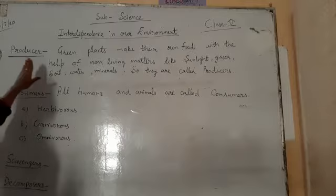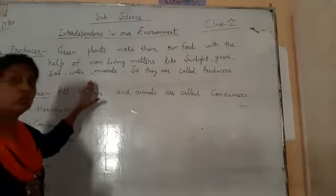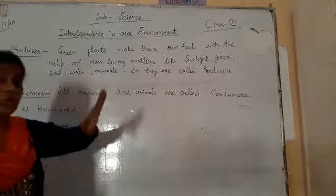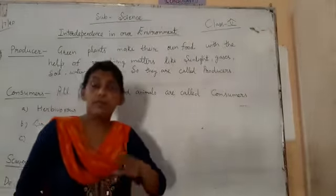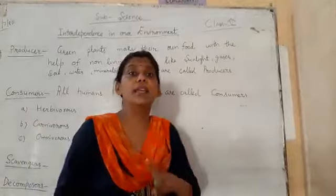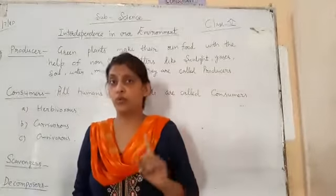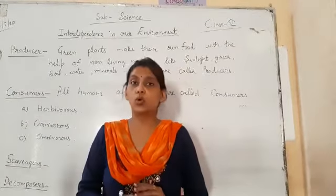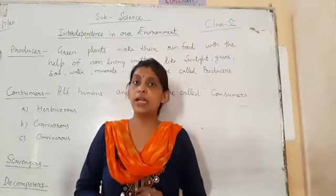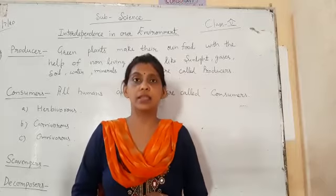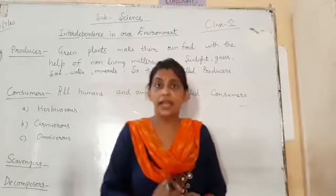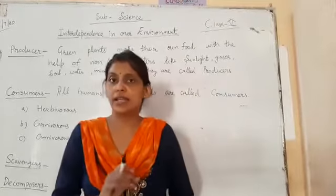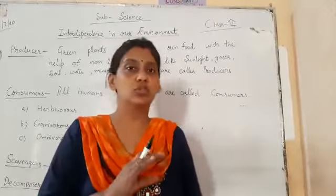What are producers? Producers are called producers because they make their own food. Green plants are called producers because they make their own food, with the help of air, water, sunlight, and minerals from soil.